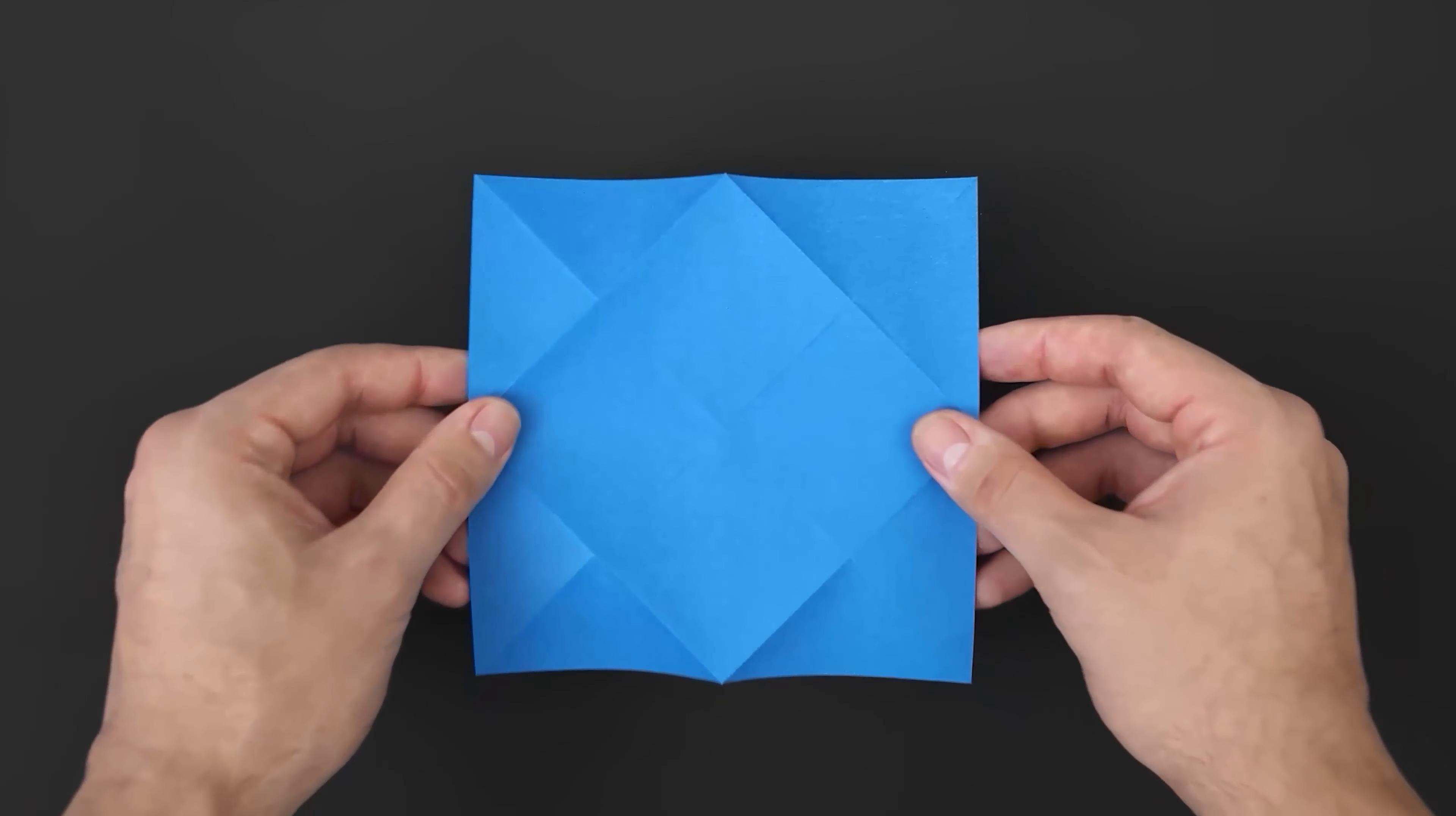On the other side, we have this remaining layer. We need to open it using the marks we've already made, like this. And now we have the same triangle on the other side.